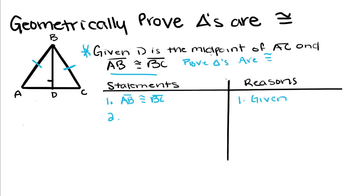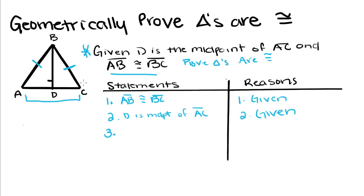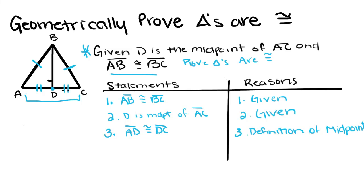The next thing we're told is that D is the midpoint of AC. So we're going to say that D is the midpoint of AC, and that is also given. If D is the midpoint of AC — which is this segment right here — if you remember what it means to be a midpoint, that means D divides AC into two congruent pieces. So for our next statement, we're going to say that AD is congruent to DC, and our reason is going to be the definition of a midpoint, because that's how we know these two are congruent.